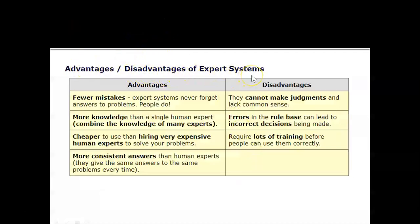Advantages and disadvantages of expert systems: Advantages include fewer mistakes — expert systems never forget answers to problems. They have more knowledge than a single human expert, since hundreds of experts may have supplied knowledge to a single knowledge base. They are cheaper to use than hiring expensive experts, and they give more consistent answers than humans, providing the same answers to the same problems every time.